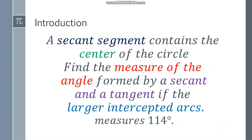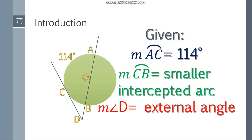Let's go back to the problem. So we have the secant segment that contains the center of the circle. Check. We are asked to find the measure of the angle, yes that will be angle D, formed by a secant and a tangent if the larger intercepted arc measures 114 degrees. Okay so we have 114 degrees here. That's the only given that we have.